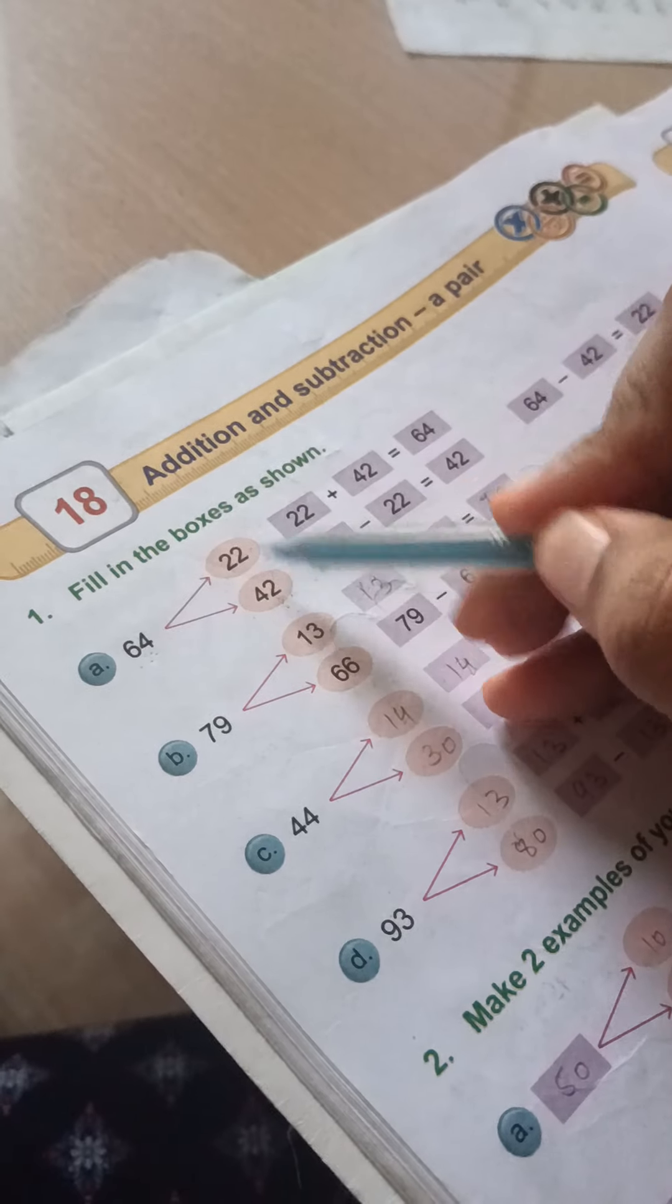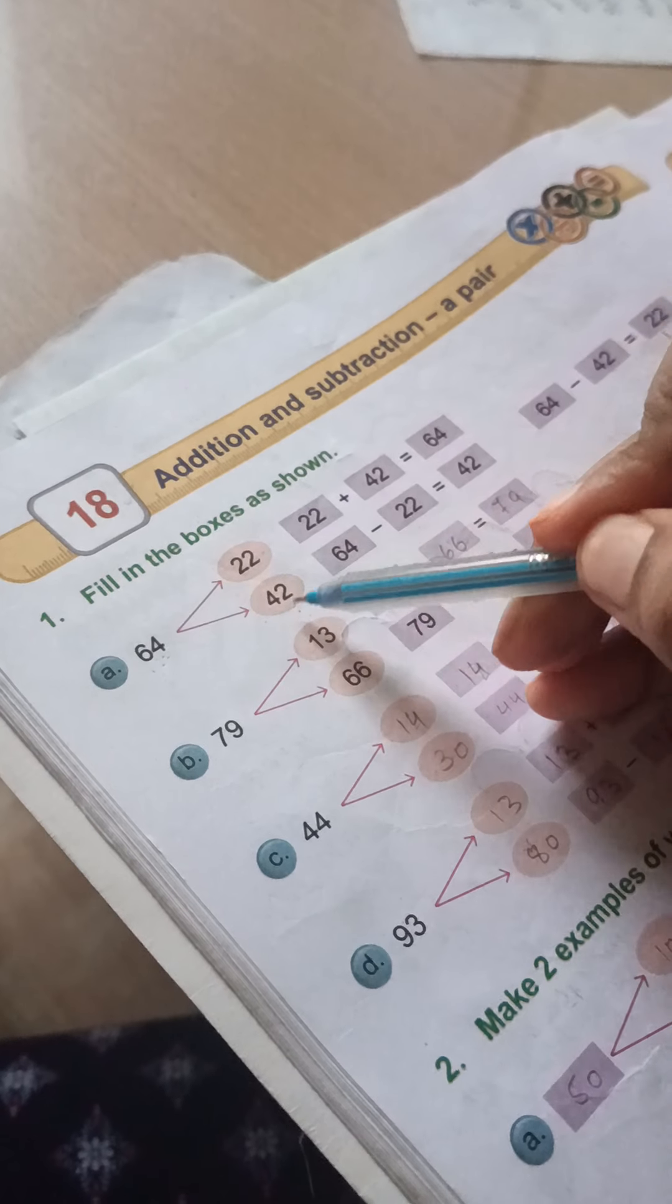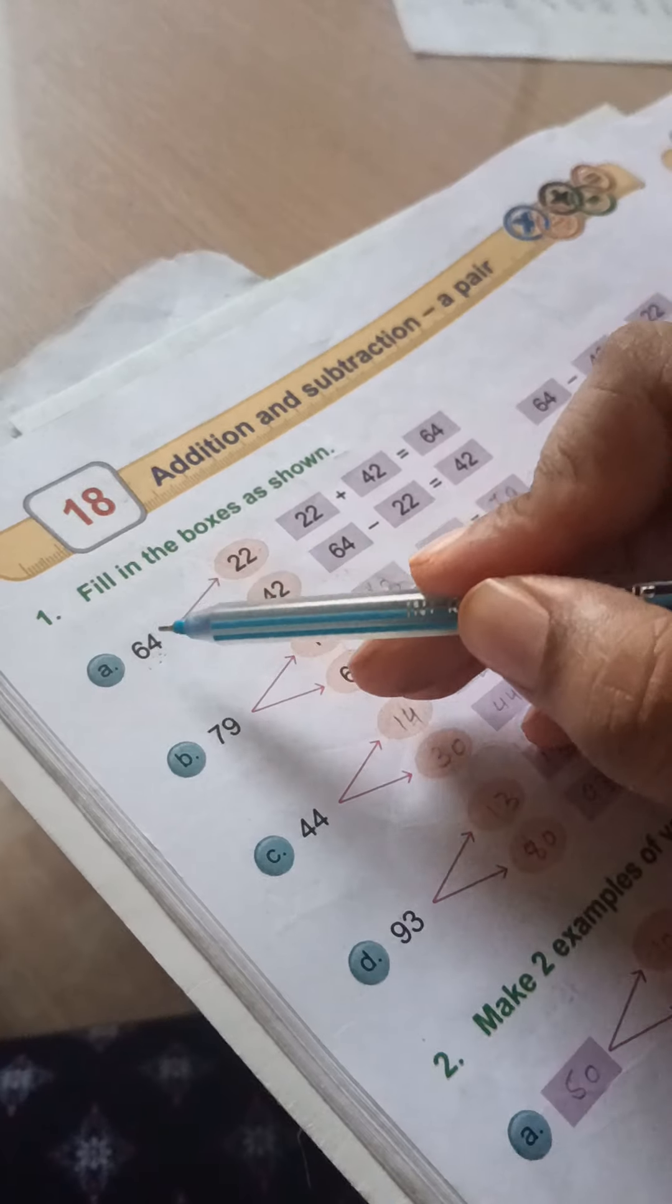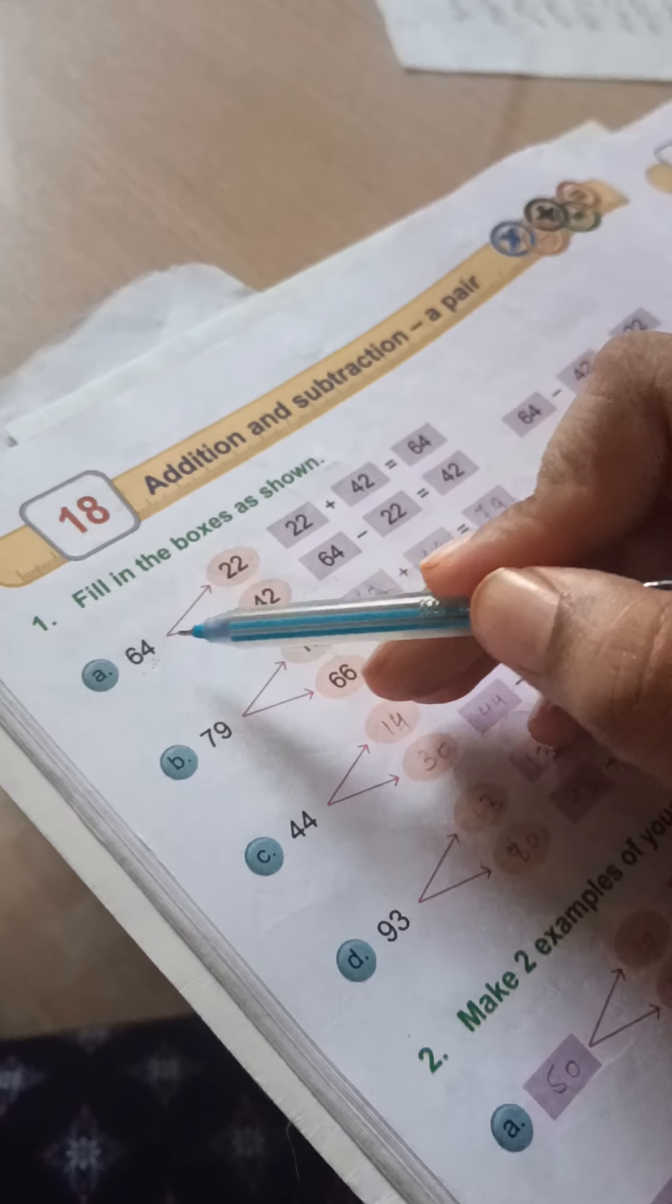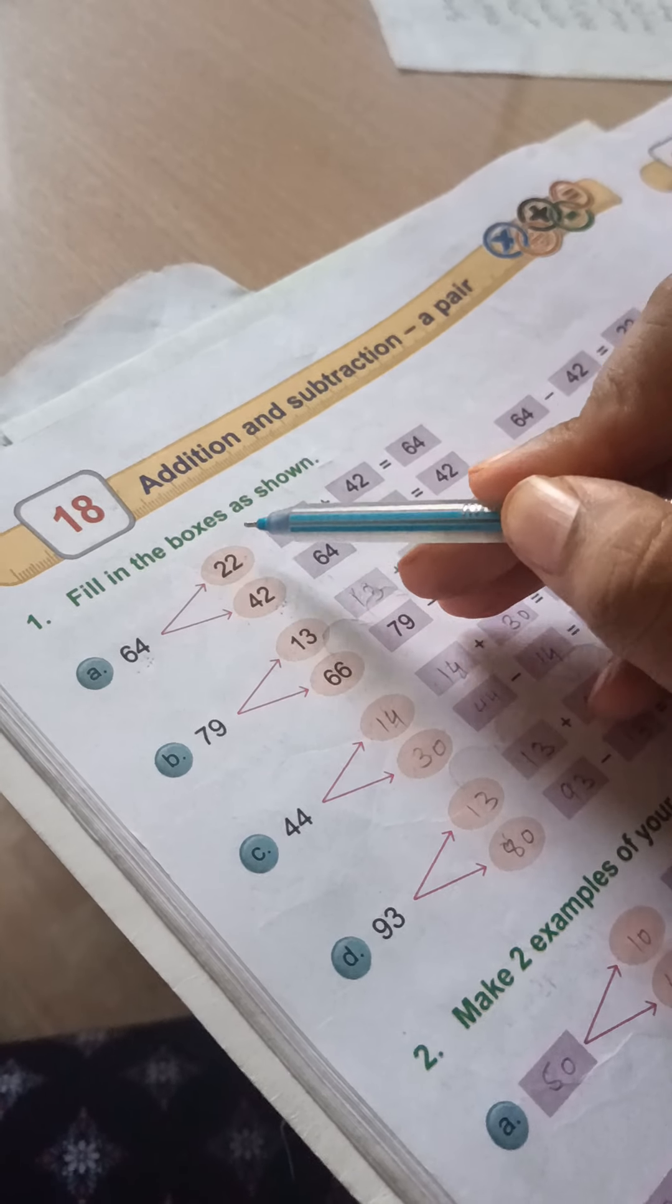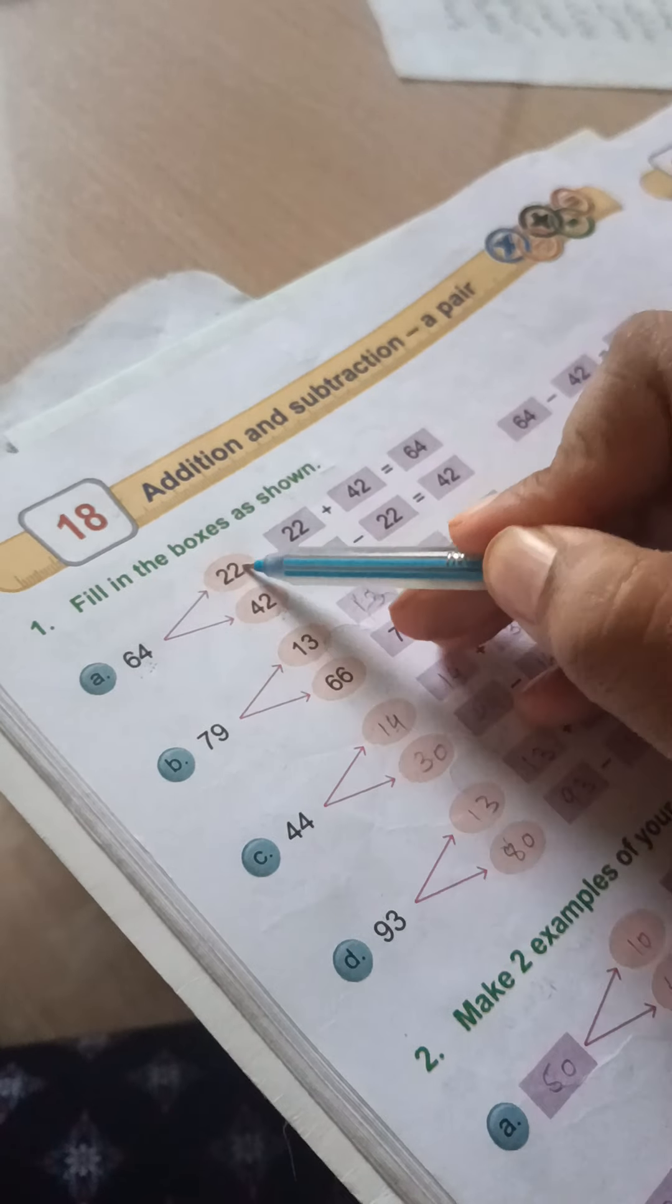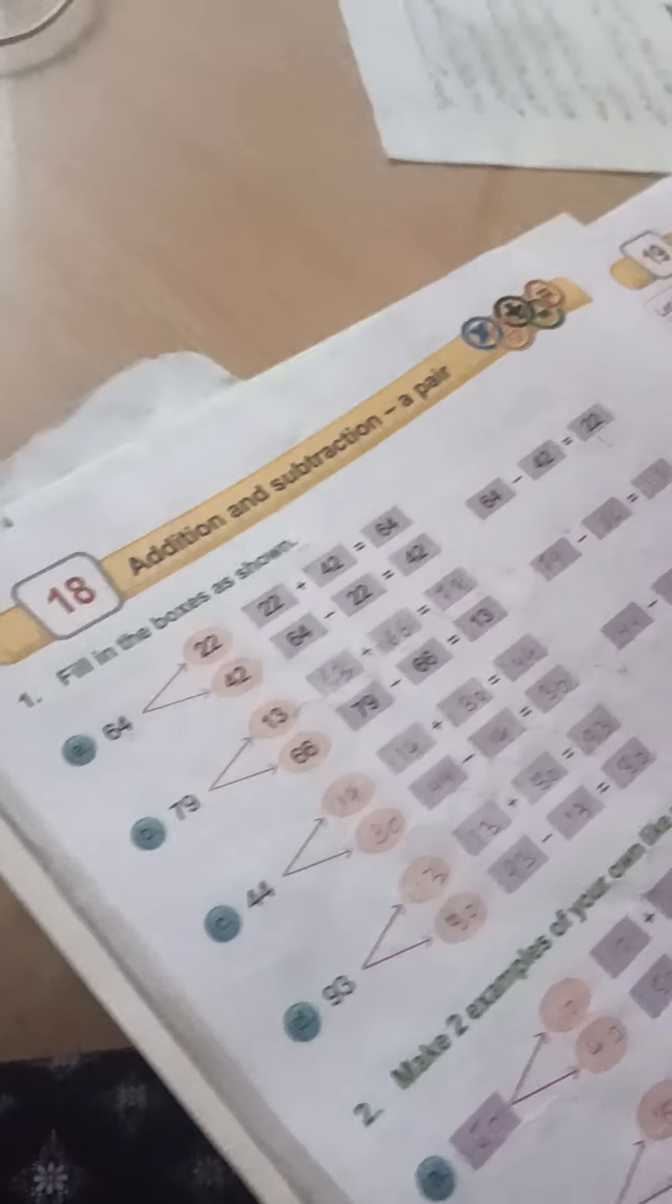What do we have to add? First, we have to add addition. Two numbers add together to give one number. If we have two of them add together, then the answer is 64. And how do we have subtraction? In 64, if we subtract 42, we get 22. In 64, if we subtract 22, we get 42. Understood?